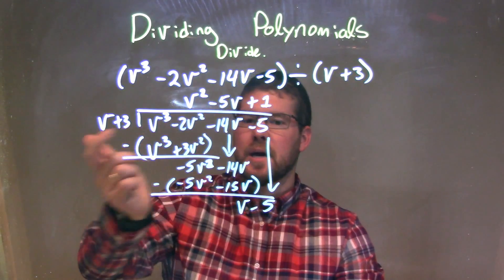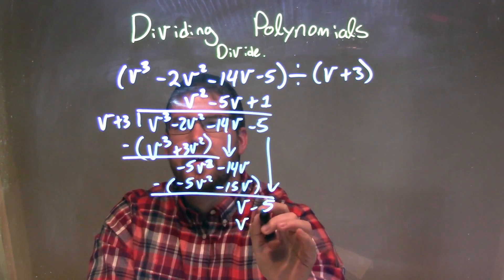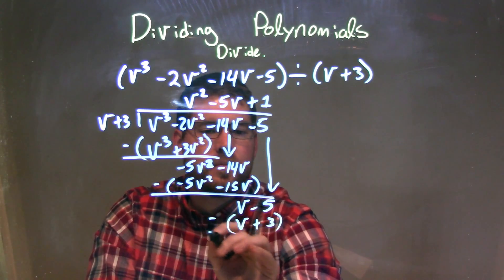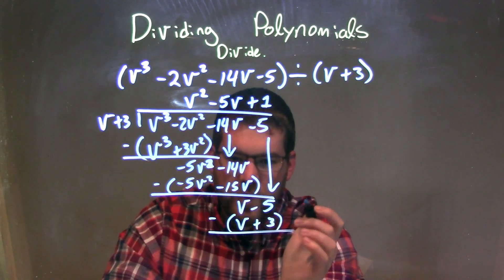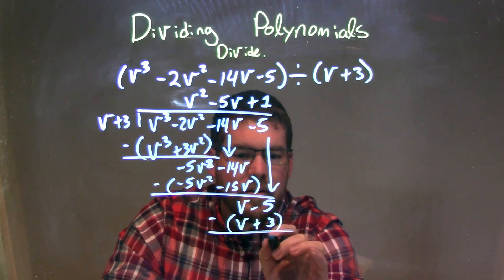1 times v is v. 1 times 3 is a positive 3. We subtract the two. v minus v is just 0. Fantastic. But -5 - 3 is just a -8.